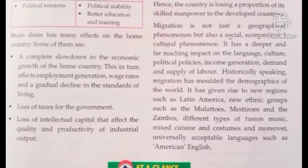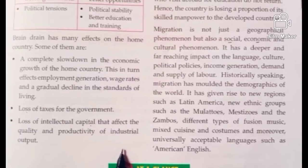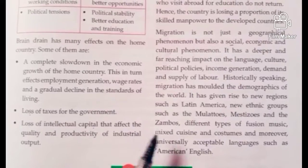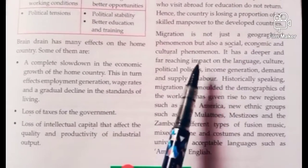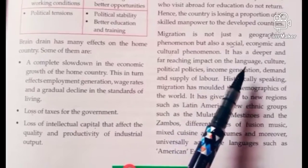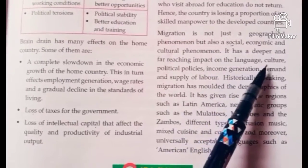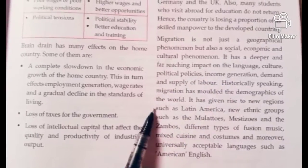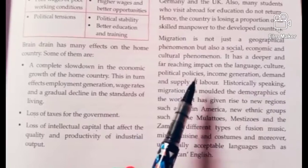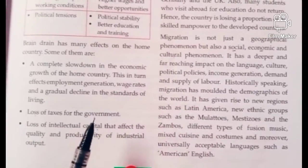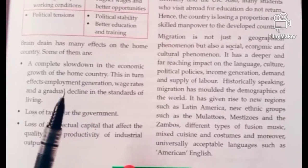Overall, migration — its types, effects, and negative and positive impacts — affects the whole world. Population migration is not just a geographical phenomenon of movement; it also has social, economic, and cultural effects. It majorly impacts the language of a particular area, the culture, political policies, income generation, and the demand and supply of labor. Overall, migration affects every aspect of life.